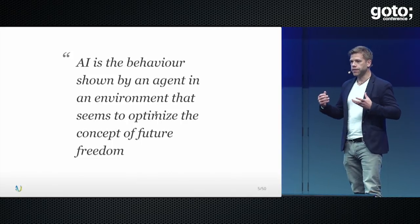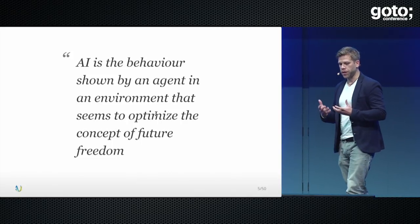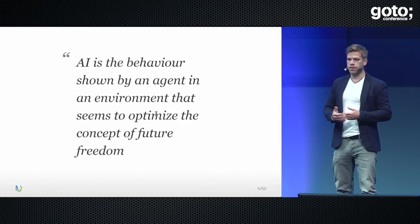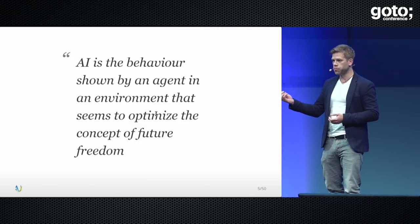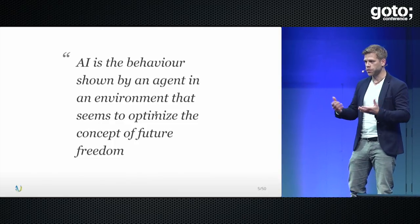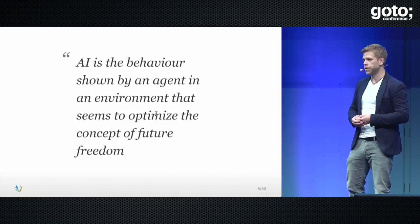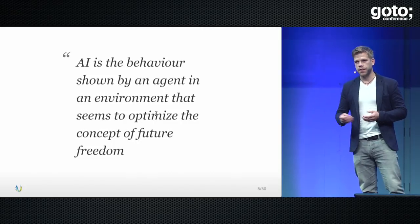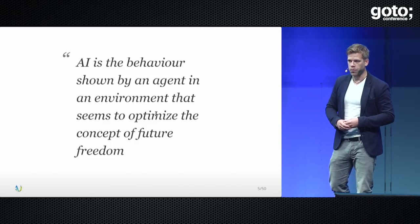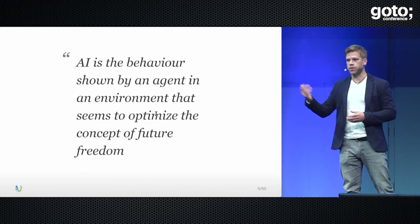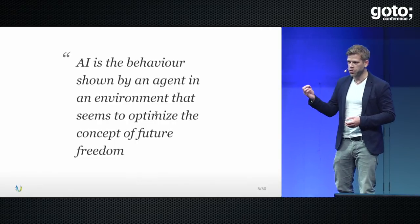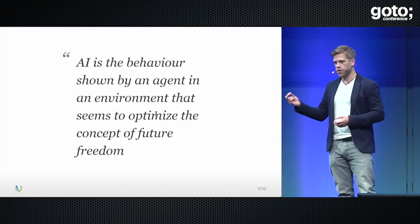My definition of AI is basically the behavior shown by an agent that is dropped into an environment, and that behavior seems to optimize the concept of future freedom. That is the closest definition I can come to, because it doesn't say anything like 'optimize the least square error' or 'do back propagation to make cross-entropy look good.' All of those things are man-made, and I assure you our brains do not do back propagation.